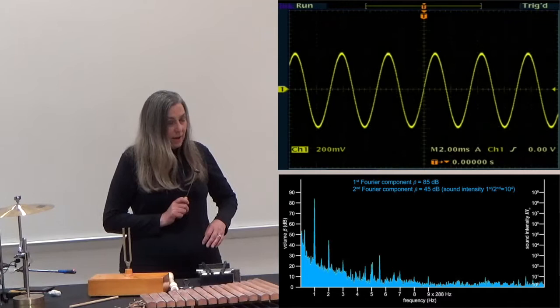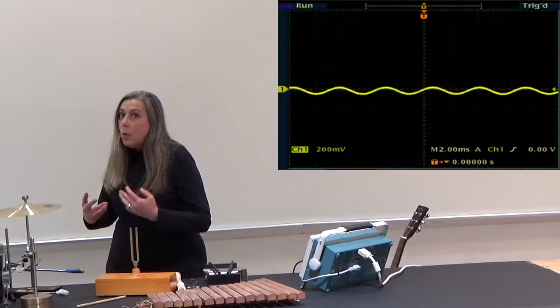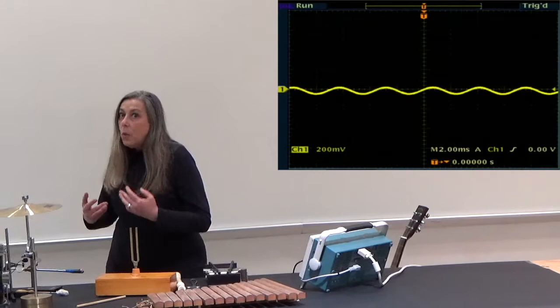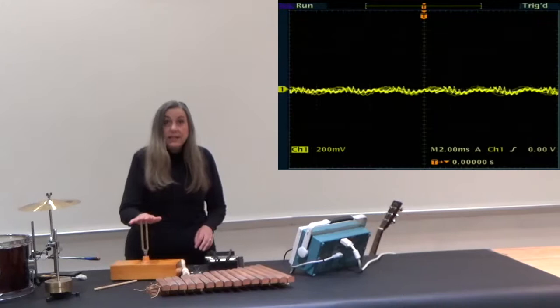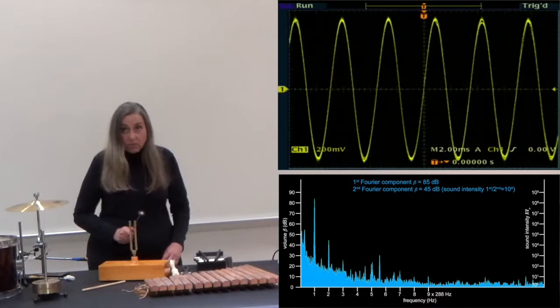All other instruments, however, have completely different waveforms. They are much more complex. There is only one frequency associated with the tuning fork, so if we look at the Fourier spectrum for the tuning fork, we only see one frequency, in this case 288 Hertz.